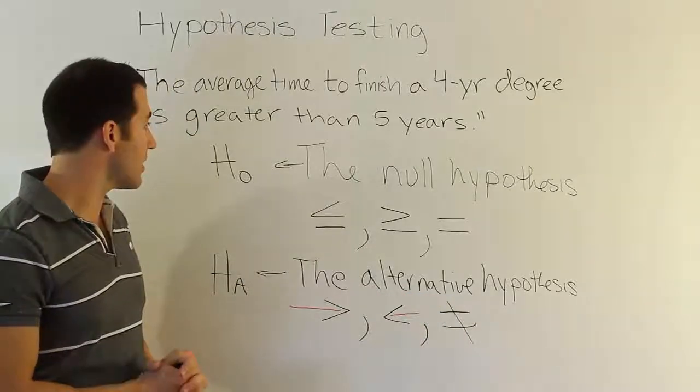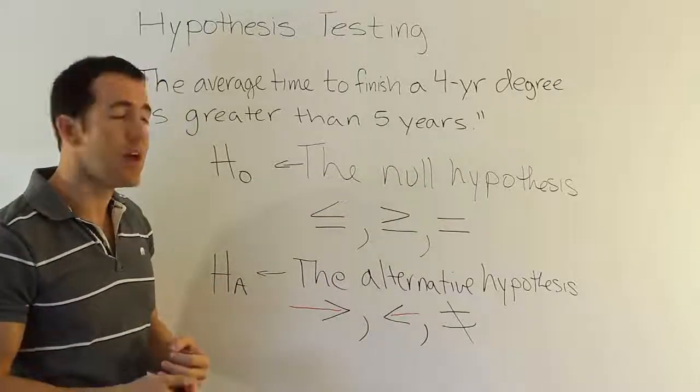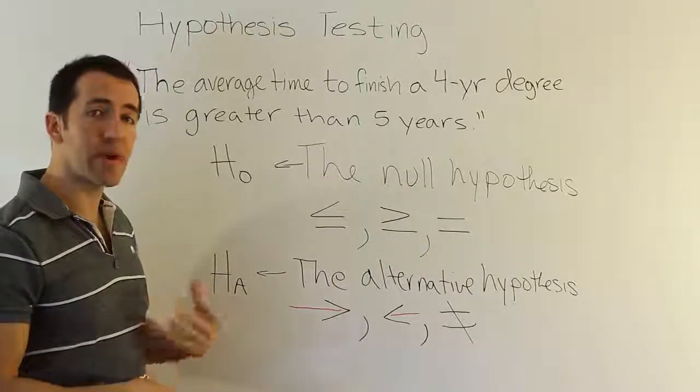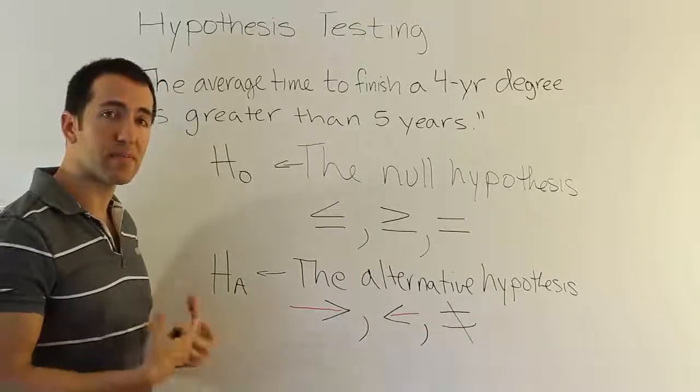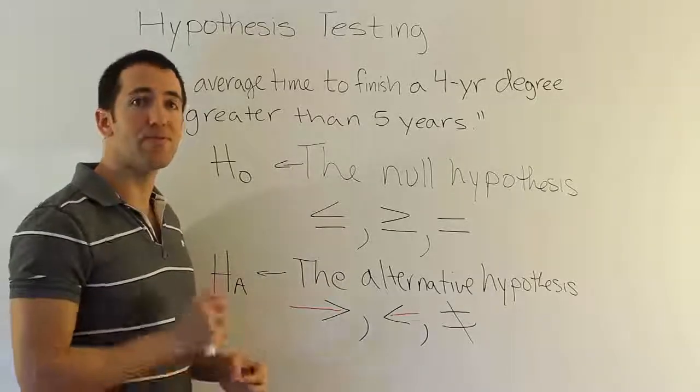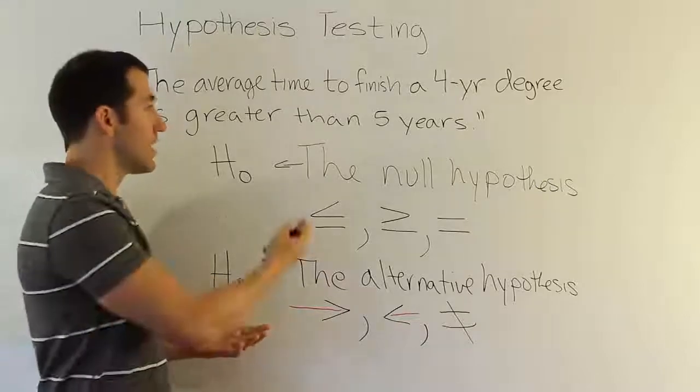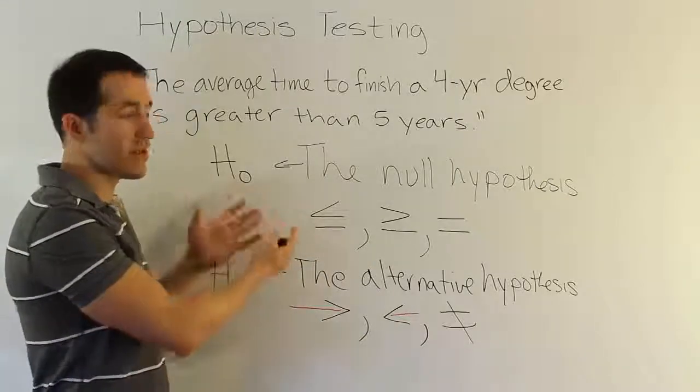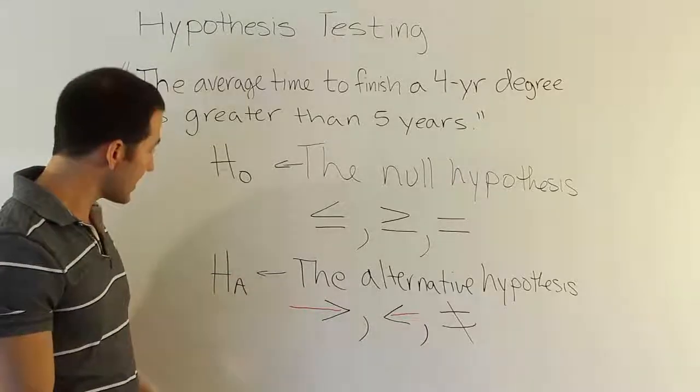The final thing I'll mention is that the null hypothesis, some people say, is the status quo hypothesis. In other words, it's the opinion that's been around for a while that people accept as being true. That's not always the case, but a lot of times that's true. The alternative hypothesis is said to be the research hypothesis. It's the hypothesis coming to challenge or to be the alternative to the status quo hypothesis that's out there already. That's all we have to say about these hypotheses.